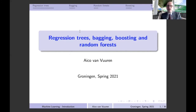Regression trees are algorithms in order to predict, like many other algorithms we have seen before. However, regression trees by themselves are actually not that great predictors. When we use simple regression trees, they usually are not great predictors, mainly because their variance is very high. Therefore, what we typically do is improve regression trees using any of these methods.